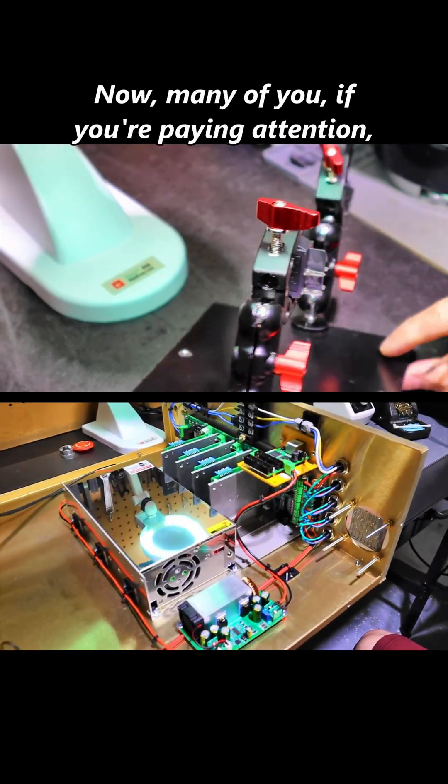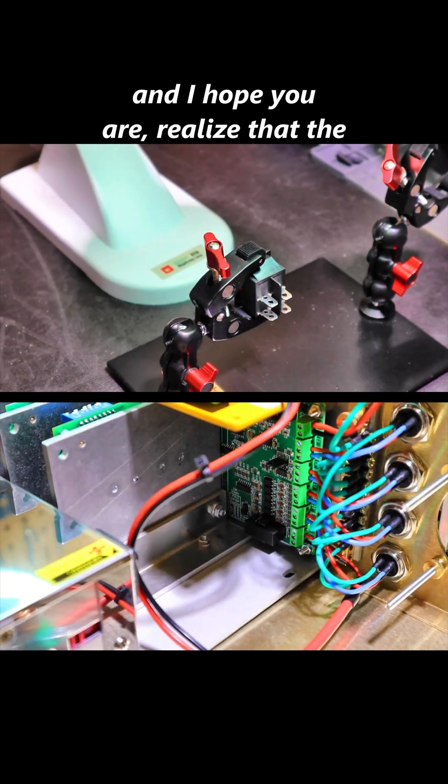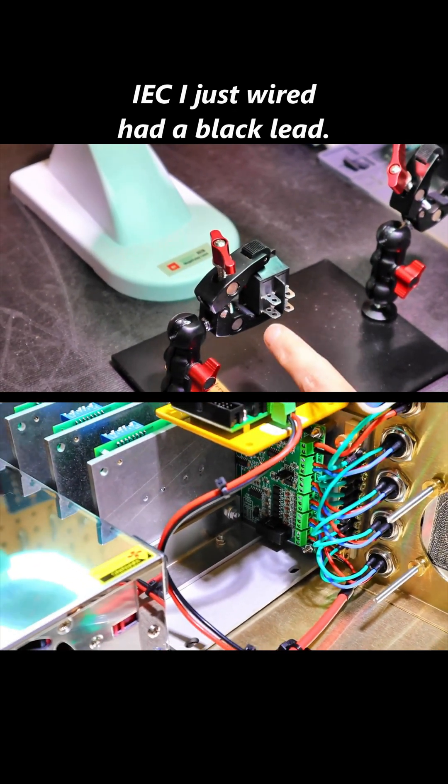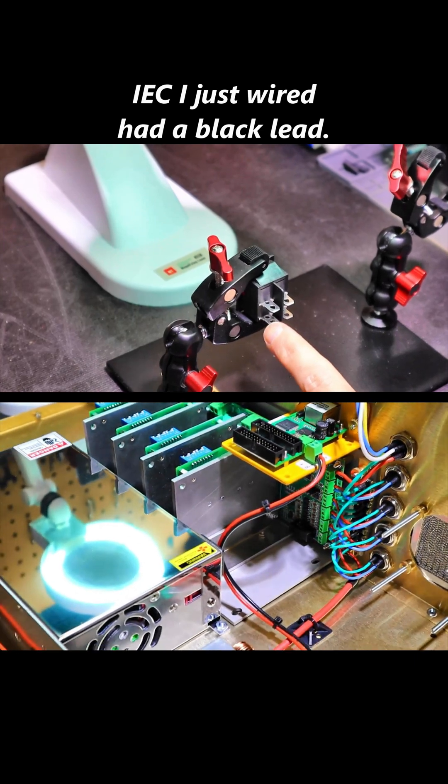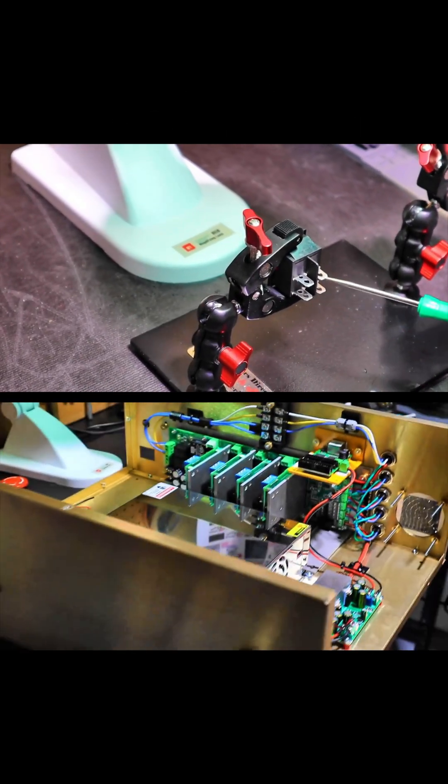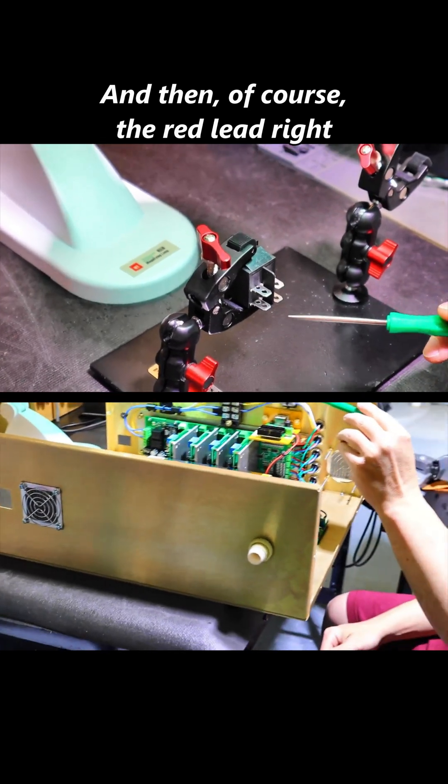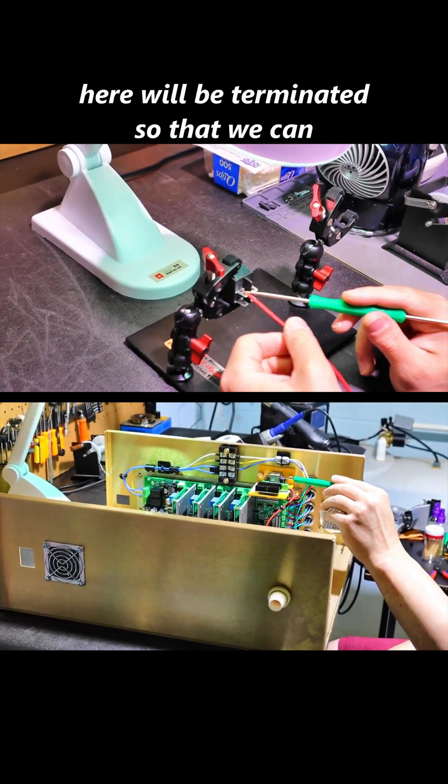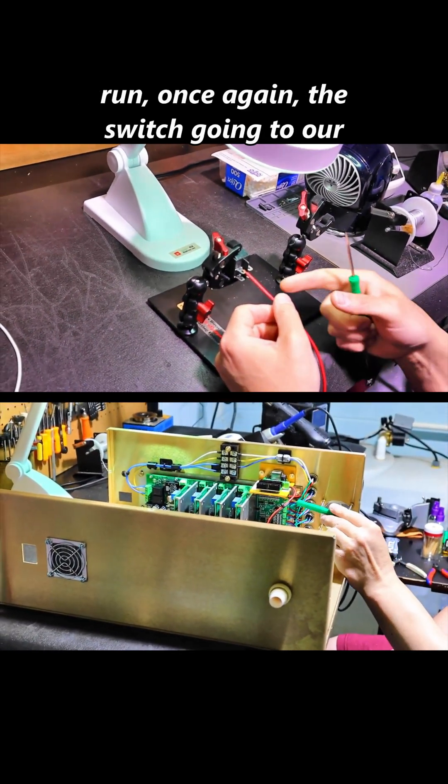Now many of you, if you're paying attention—and I hope you are—realize that the IEC I just wired had a black lead. You guessed it, that's where that black lead will be terminated. And then of course the red lead right here will be terminated so that we can run the switch going to our power supply to cycle it on and off.